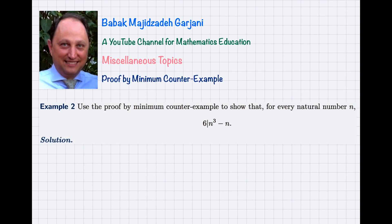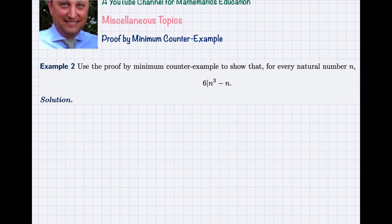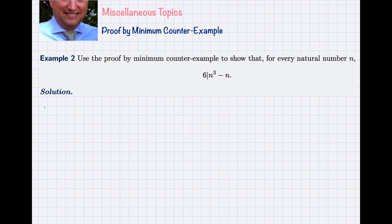Now let us go and solve another example. Example 2: Use the proof by minimum counterexample to show that for every natural number n, 6 divides n³ − n.